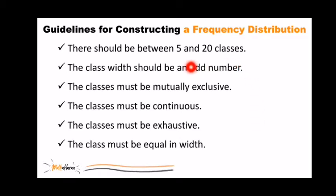First, there should be between 5 to 20 classes. It will always be your prerogative as a researcher, but when creating a frequency distribution, the number of rows should not be too few and not too many. So it depends on your presentation page whether it will fit or not, whether it's readable or not.